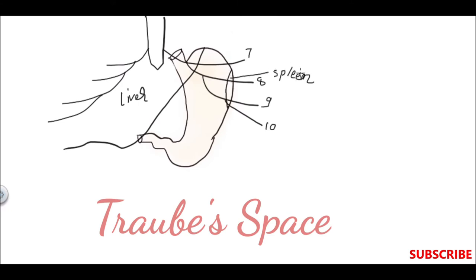Here this is the spleen. Above there is the lower border of the left lung. So this space is bounded above by the lower border of the left lung, to the right by the inferior border of the liver, on the left side by the spleen, and below by the costal margin.